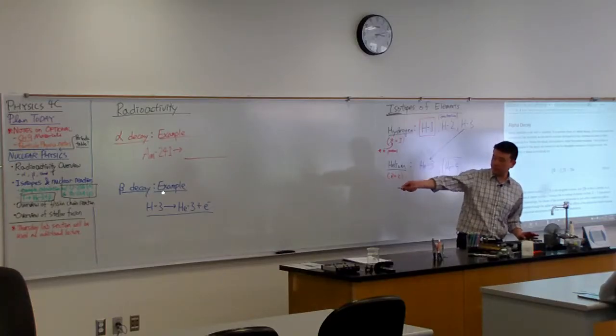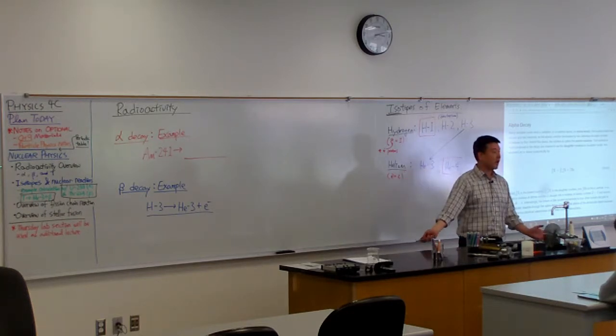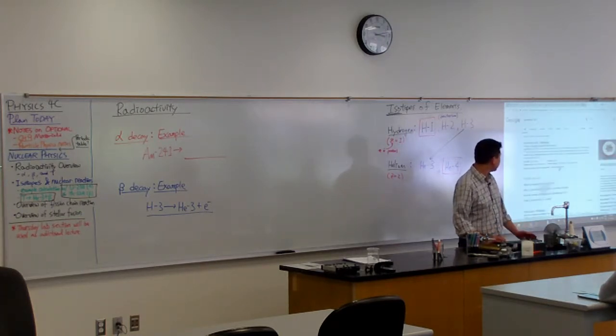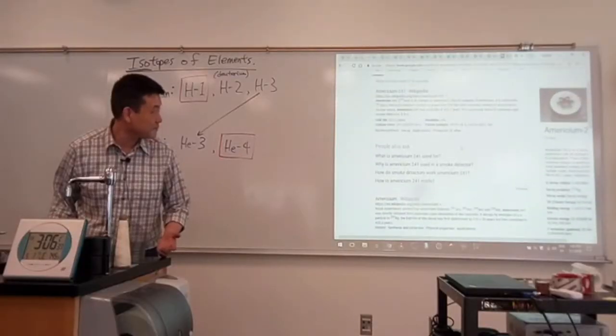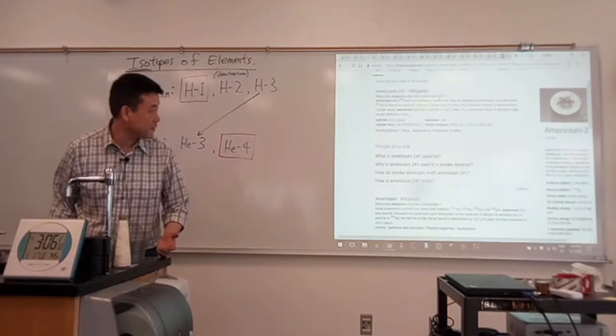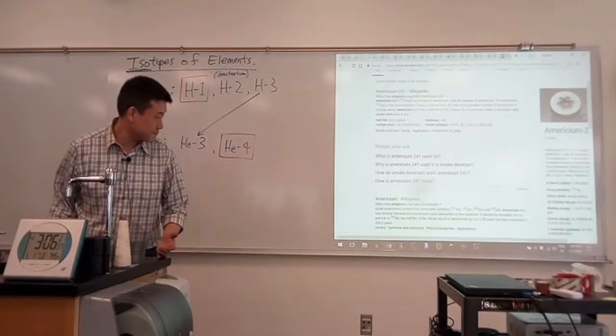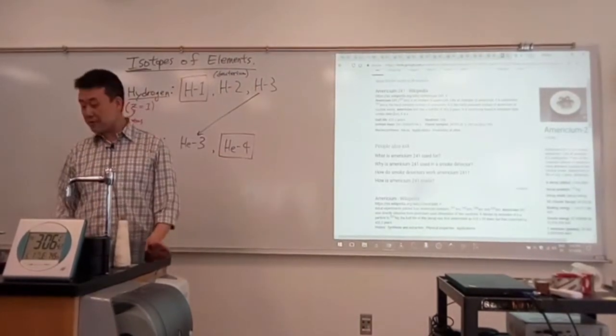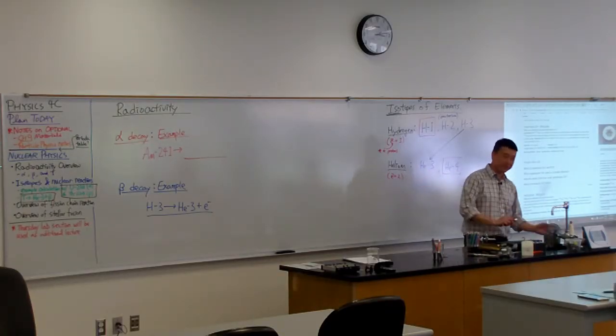So I have a couple examples of the alpha source that I happen to know. Americium, I think 241 is right. Let me just double check. Americium 241, if I guessed it right, then it will be talking about smoke detectors somewhere. Smoke detectors, yeah. Okay, 241. So Americium 241 undergoes alpha decay, and that's used in smoke detector.